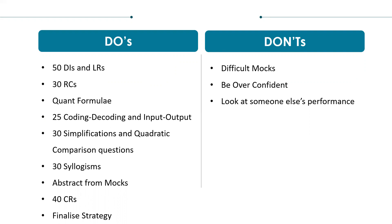Solve 25 coding decoding and input-output sets and remember the pattern — it is possible that you may get something similar in the exam. Also solve 30 syllogism and 40 critical reasoning questions. You can brush up abstracts from all the mocks that you have given so far. These are just the lower limits. If you can solve more, that will benefit you. But at least if you are solving these things, you will get some good college — that I can assure you.